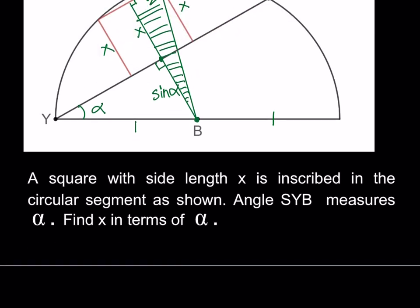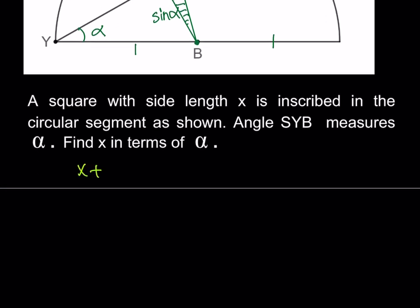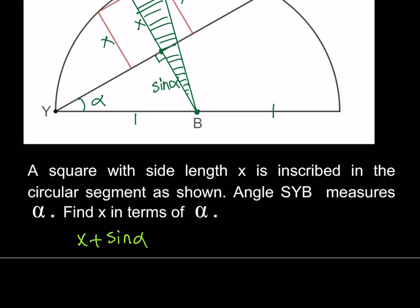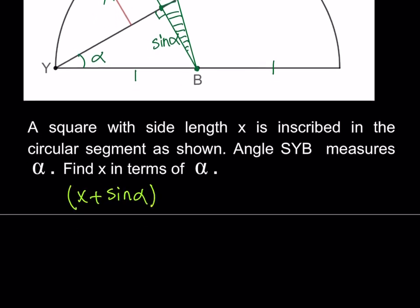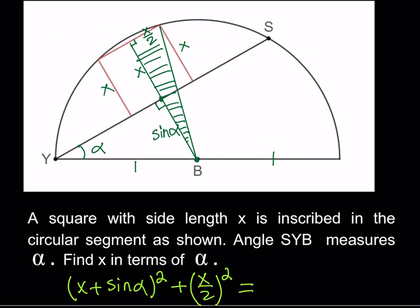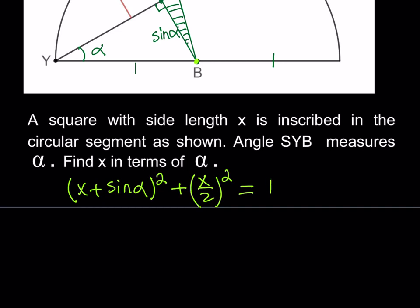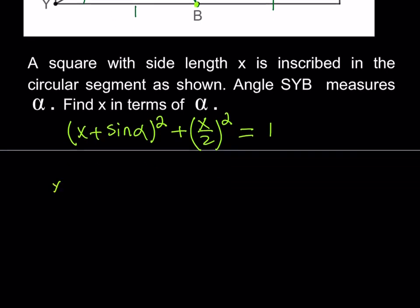It's going to look like this. I have x plus sine alpha, which is going to be kind of like the height of my right triangle. And the base is x over 2. So this is squared plus x over 2 squared. And the hypotenuse in this case is equal to what? That's another question. Well this is a point on the circle and this is the center of the circle. Therefore the distance between those two points is going to be the radius which is 1. So this is equal to 1. 1 squared but that's 1. So now our goal is to find x. Let's go ahead and try to find x from here. Let's go ahead and expand it.